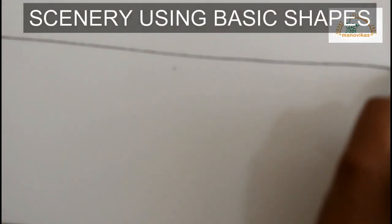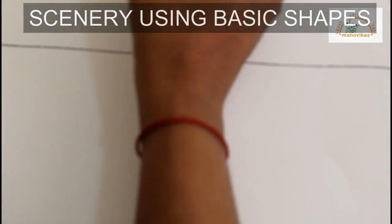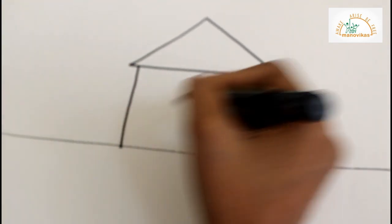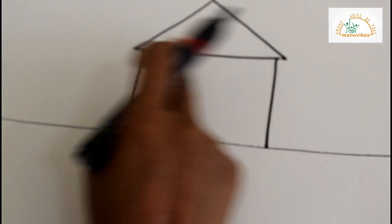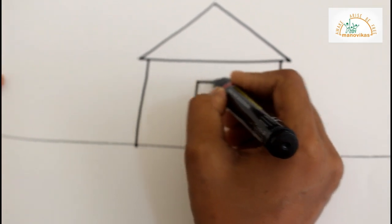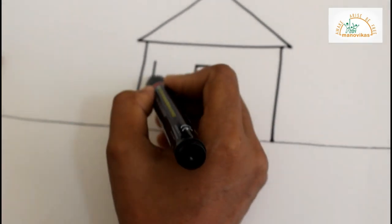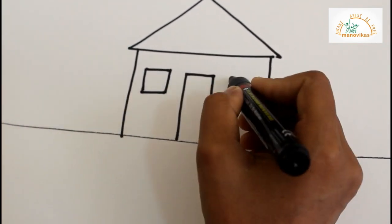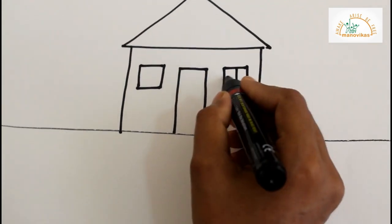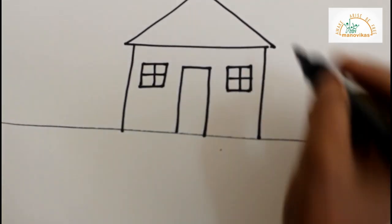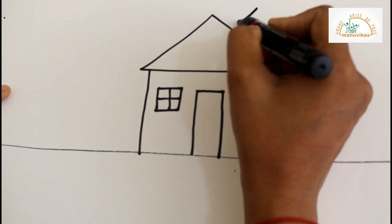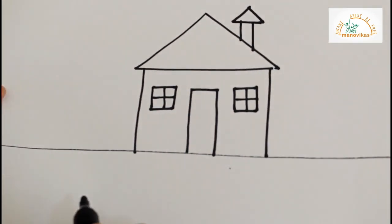Draw a sleeping line, then a triangle, two more lines — we get a rectangle, one more small rectangle, two squares, two more standing lines, and a small triangle.